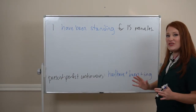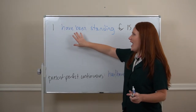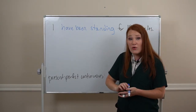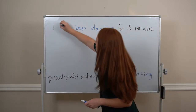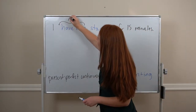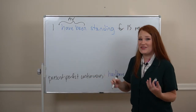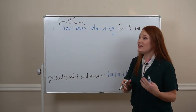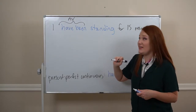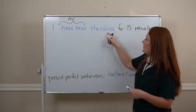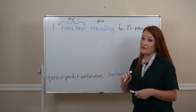It's a little confusing because 'has' or 'have' and 'been' are both auxiliary verbs. In the past, we've only ever had one auxiliary verb, so this is a little different. We have two auxiliary verbs here, and then that -ing verb is actually our main verb.